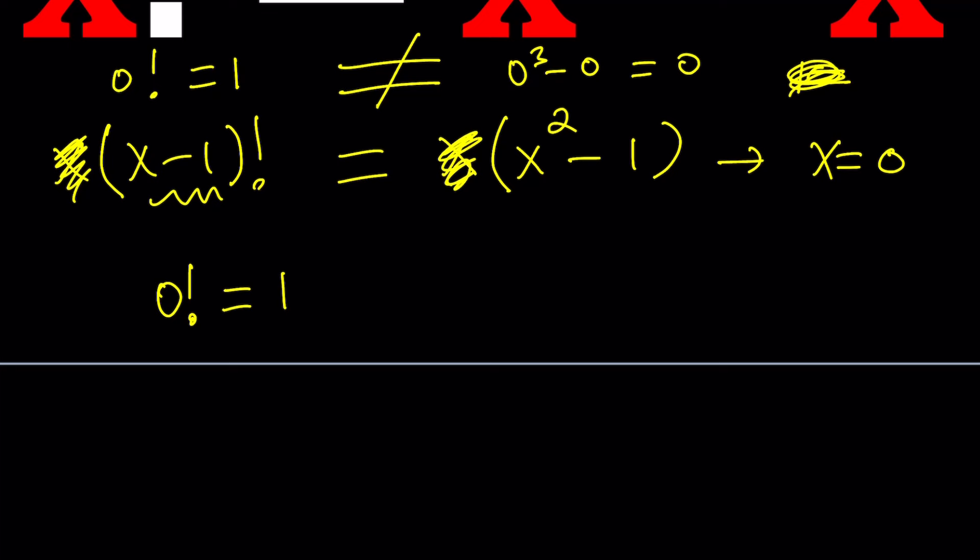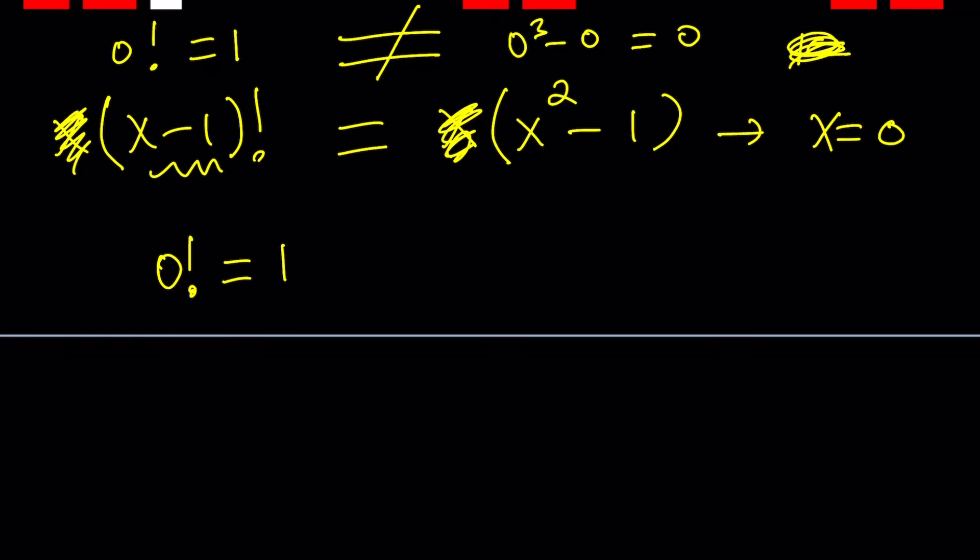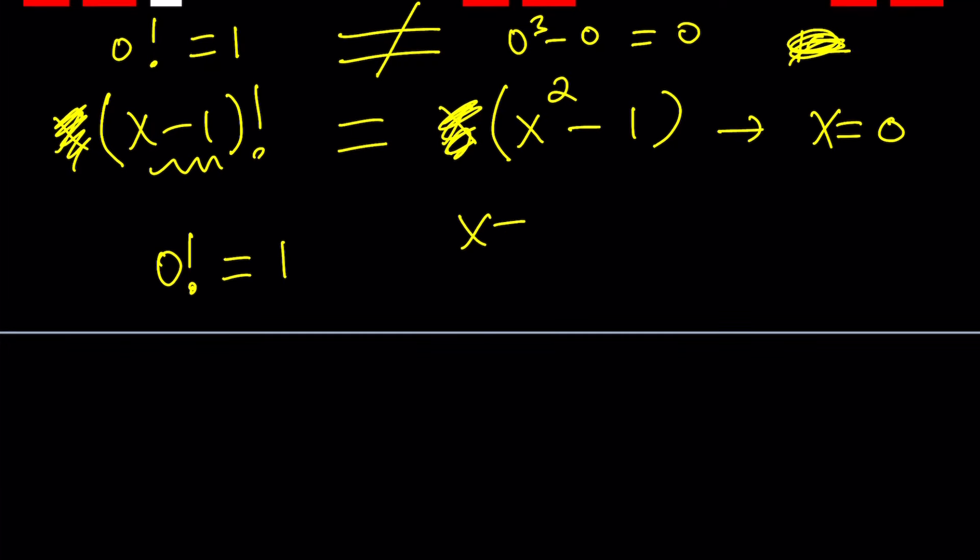So once we get rid of the x and noticing that 0 and 1 are not solutions, we can go ahead and expand a little bit more. So x does not equal 0, x does not equal 1. We know that, right?